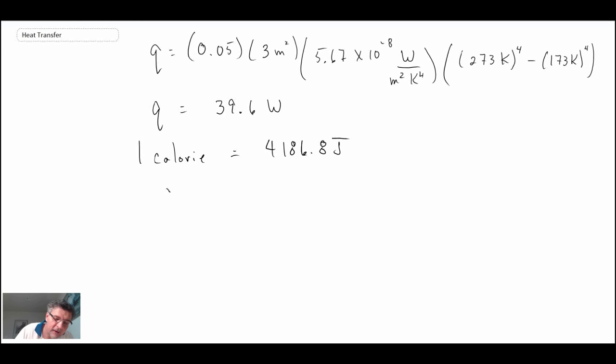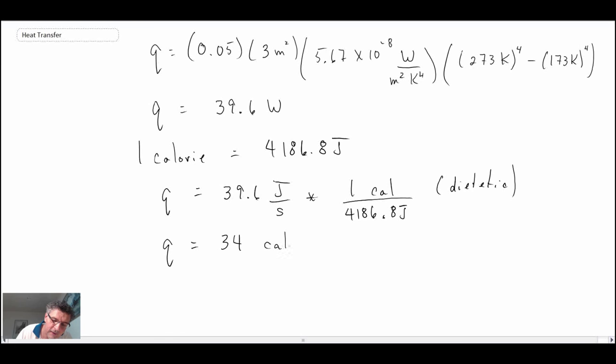So what I'm going to do, I'm going to convert the heat loss into calories. And we're going to convert this instead of calories per second. We'll do calories per hour. Because that's a little bit more of a meaningful number. So that's dietetic. So that is relating to food. And with this, we find that the heat loss translates into 34 calories per hour.